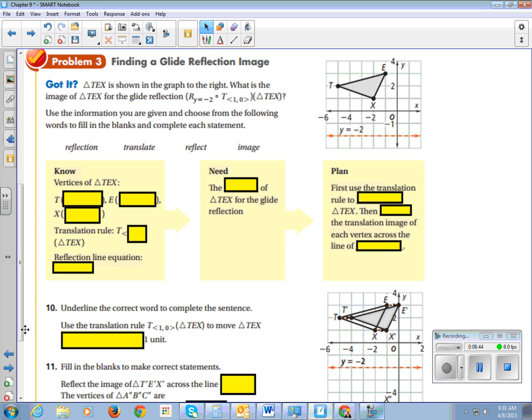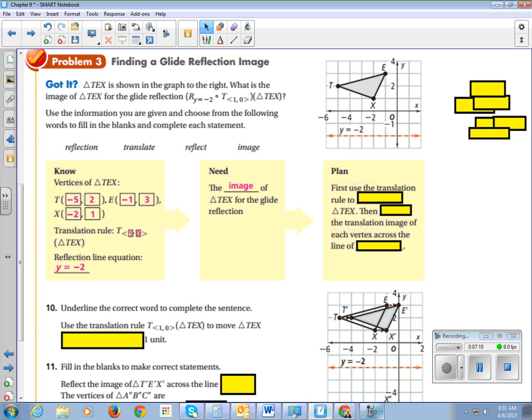So what we know. We know the vertices of triangle TEX. So T is at negative five, two. E is at negative one, three. And X is at negative two, one. So we're going to add a one to all of our X coordinates and nothing to all of our Y coordinates. And then we're going to reflect it across the line Y equals negative two. What we need is the image of triangle TEX for the glide. And we are first going to use the transition rule to translate TEX. And then we're going to reflect the translation of each vertex across the line Y, the line of reflection, Y equals negative two.